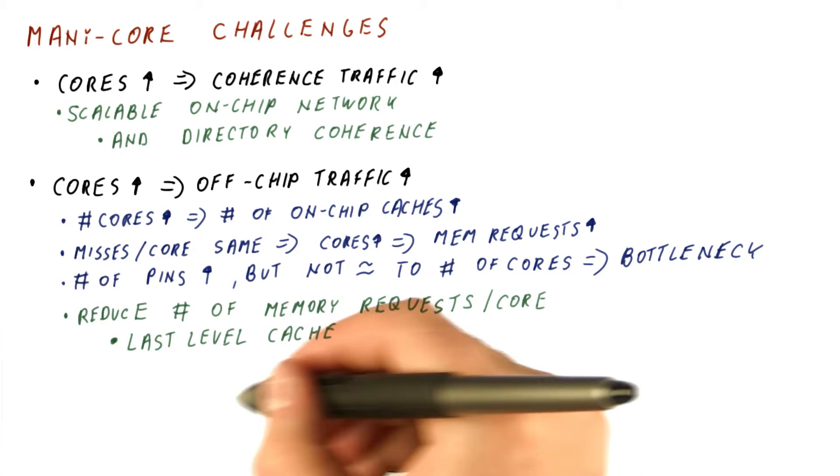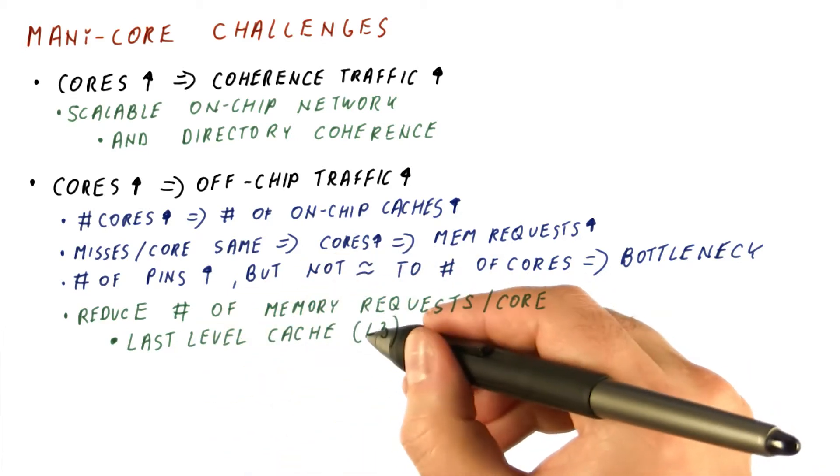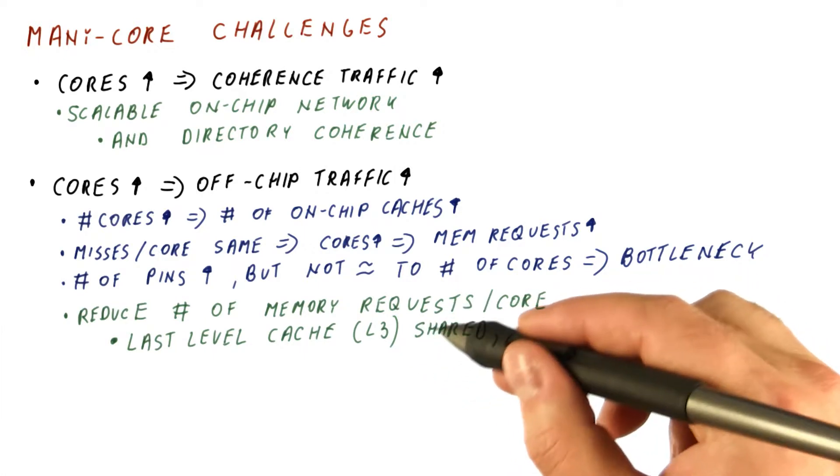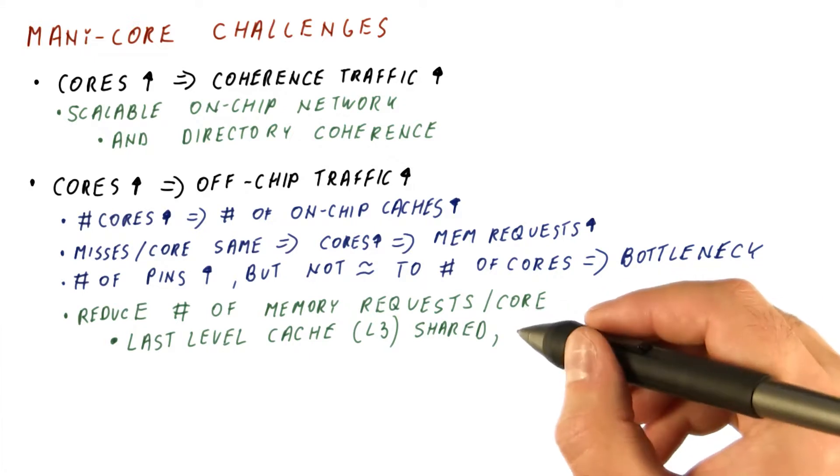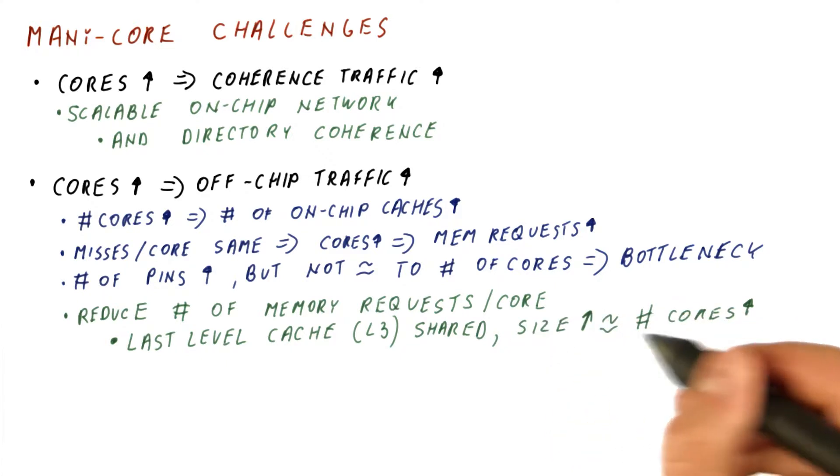And the way we do that is to make the last level cache, which in most today's processors is the level three cache, shared so that all cores go to that cache and its size is shared equally by all the cores. And the size of that cache needs to go up in proportion to the number of cores.